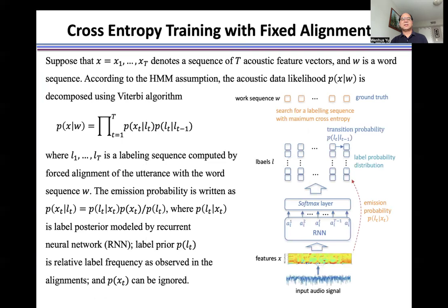Suppose that x denotes a sequence of T acoustic feature vectors and w is the word sequence. According to the Hidden Markov Model assumption, acoustic data likelihood p(x|w) is decomposed as a product of emission probability and transition probability, where l_1 to l_t is a labeling sequence computed by forced alignment of the utterance with the word sequence w.